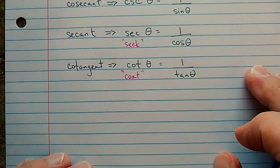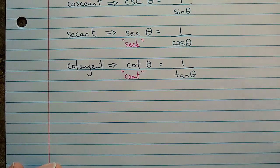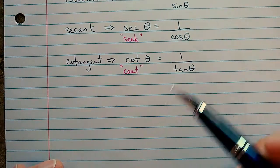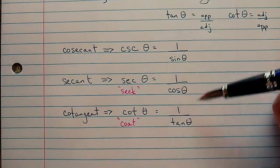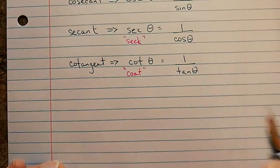So when you need to make a calculation with one of these using a calculator, you do need to switch it using these relationships into the primary ratio. So let's look at an example.